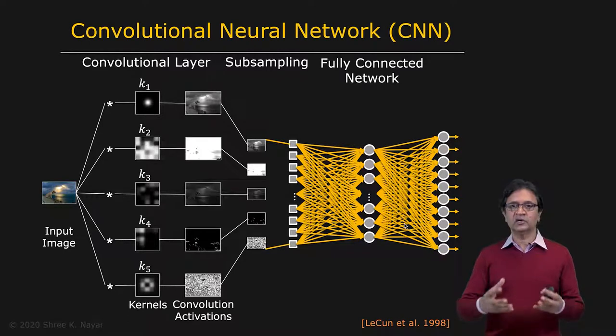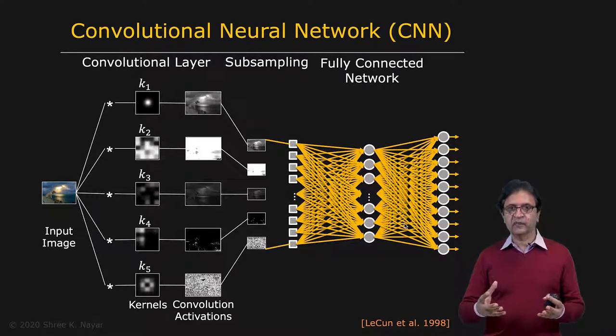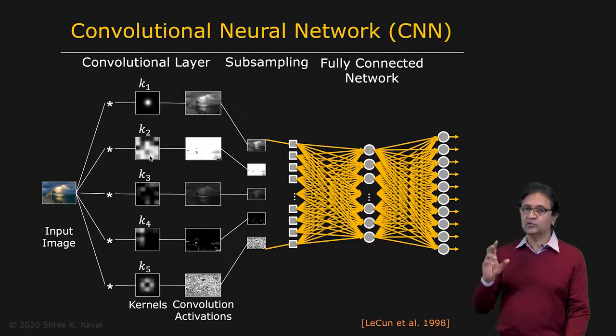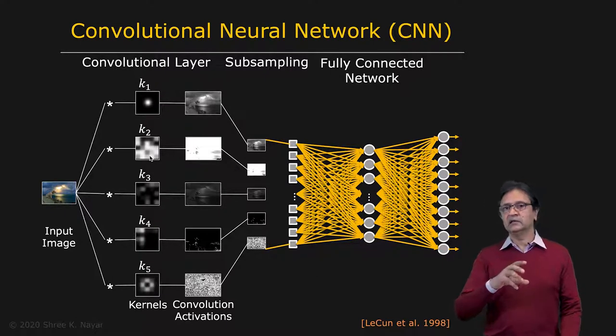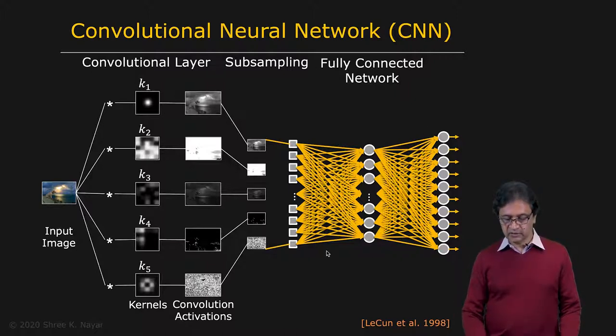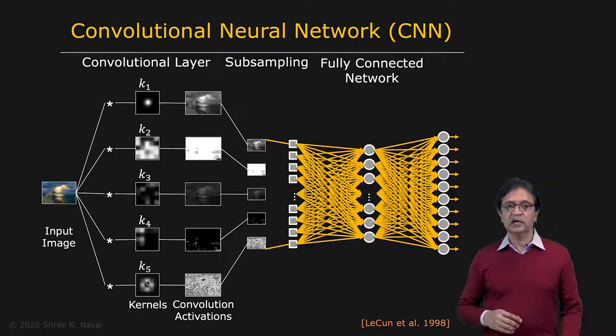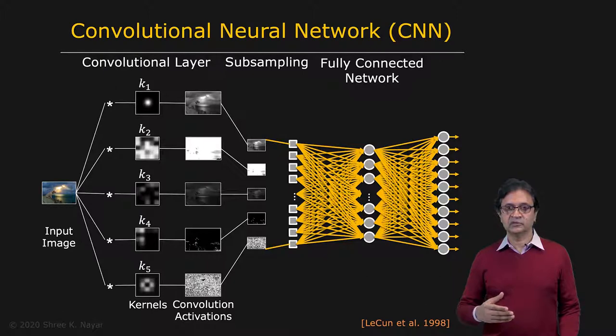The advantage here is that you can train this network where the parameters of the kernels right here are also treated as unknown. That is, not only is the network during training figuring out what the weights and biases in this part of the network are, but also the kernels, the convolution kernels as well. So that's a very powerful idea due to LeCun and that has huge implications, particularly when it comes to applications in computer vision.